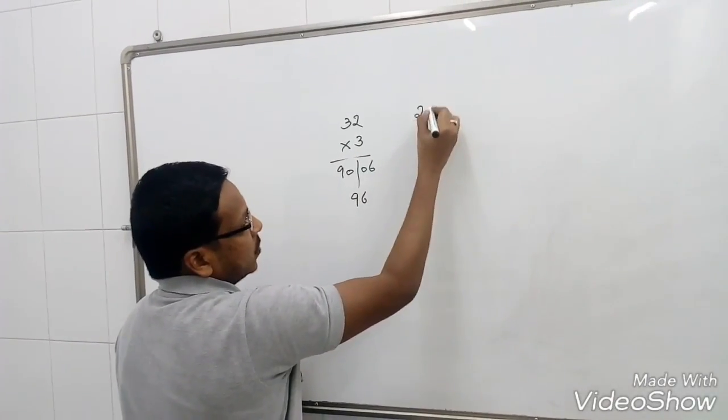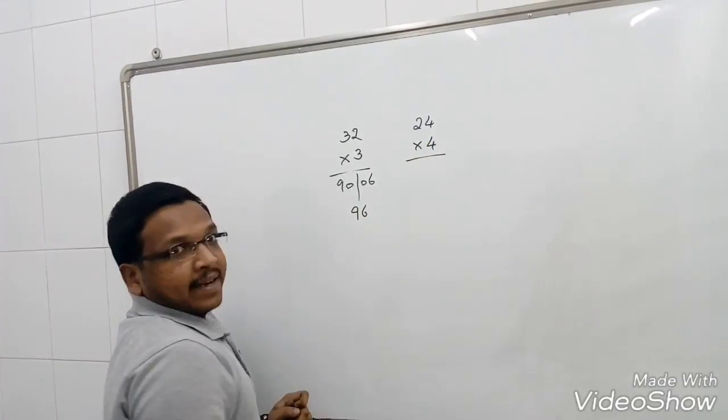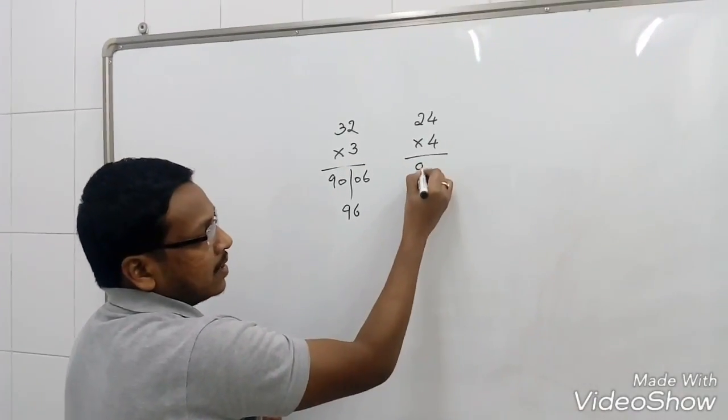Similarly, let's see one more example. 24 into 4. 4 times 2 is 8, so I will assume as 80 plus 16. 80 plus 16 is nothing but 96.